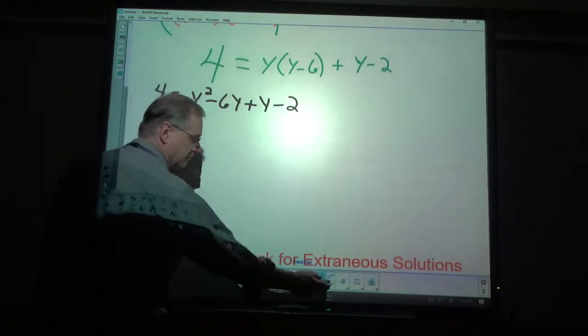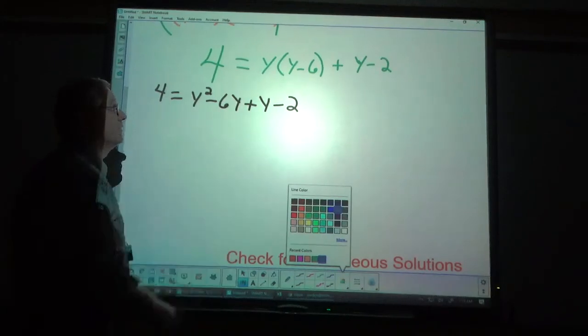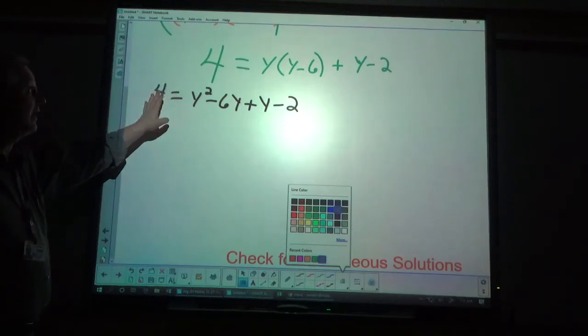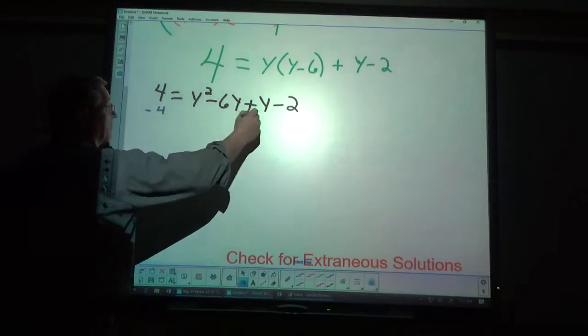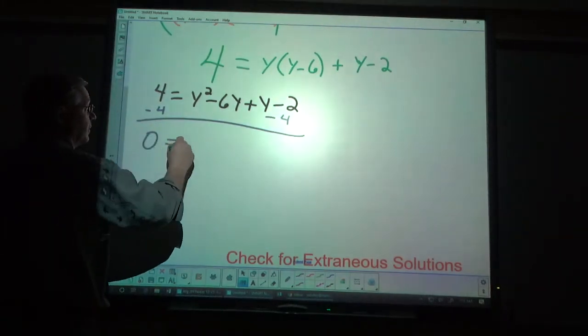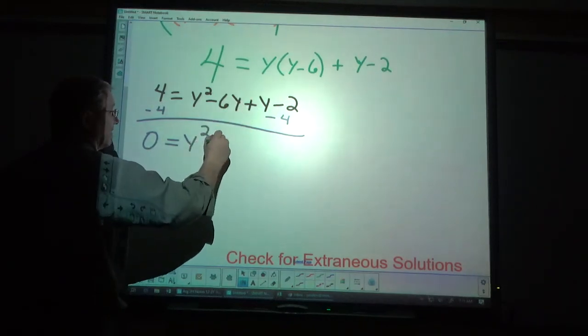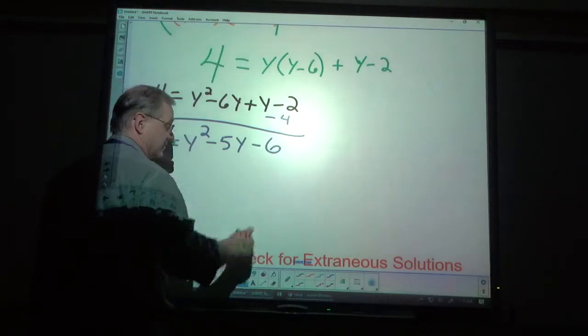Next step in the process here is I want to get everything. I've got a squared term. So, when I have a squared variable and I can't get rid of it, I want to get everything on one side equal to 0. So, I subtract 4 from both sides. And, I combine like terms. y squared. I've got negative 6y and 1y makes negative 5y. And, negative 6.